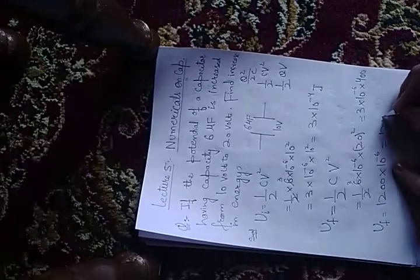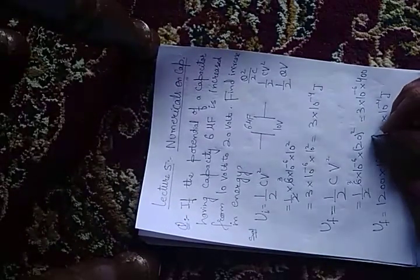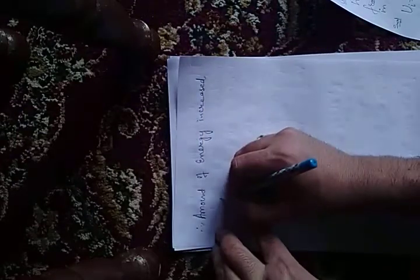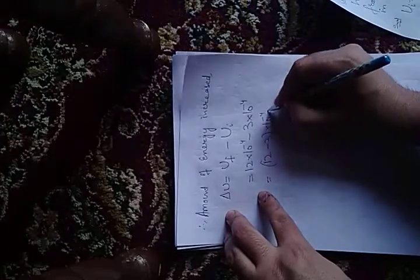So final energy, 3×400 is 1200×10⁻⁶, this will become 12×10⁻⁴ joules. This is initial energy, this is final energy. So you can tell yourself the amount of energy increased. Amount of energy increased equals final minus initial. Final is 12×10⁻⁴, initial is 3×10⁻⁴, 10⁻⁴ common. So answer is 9×10⁻⁴ joules.